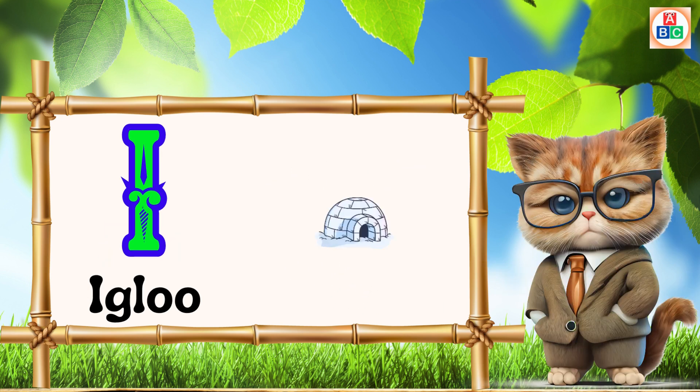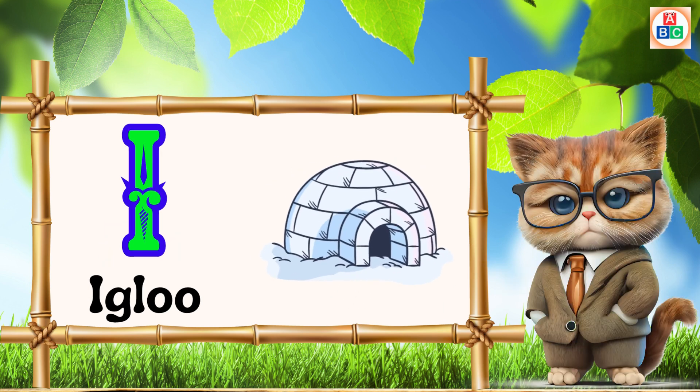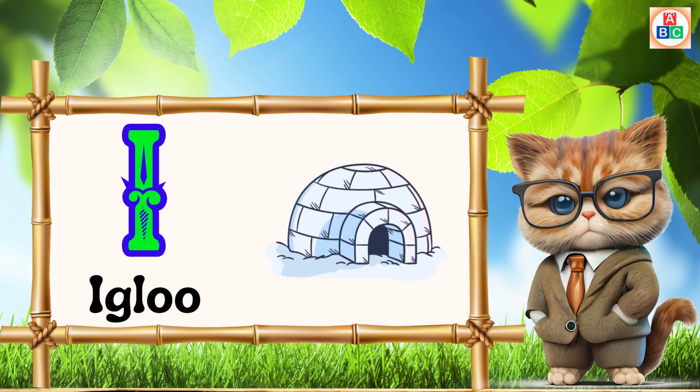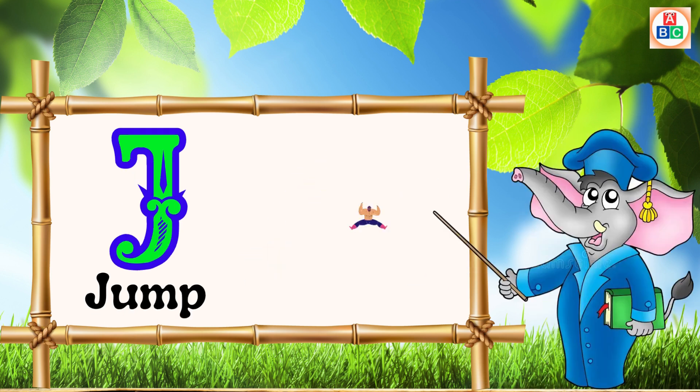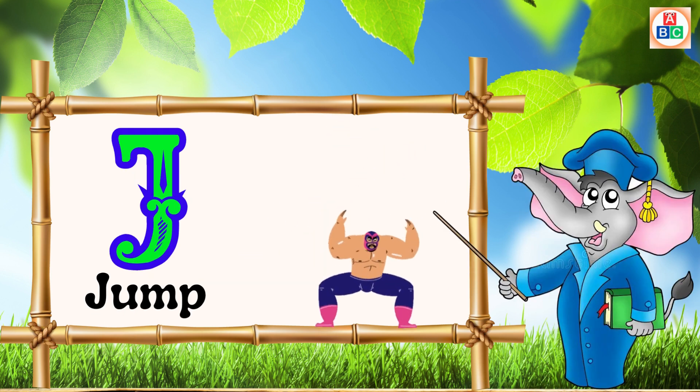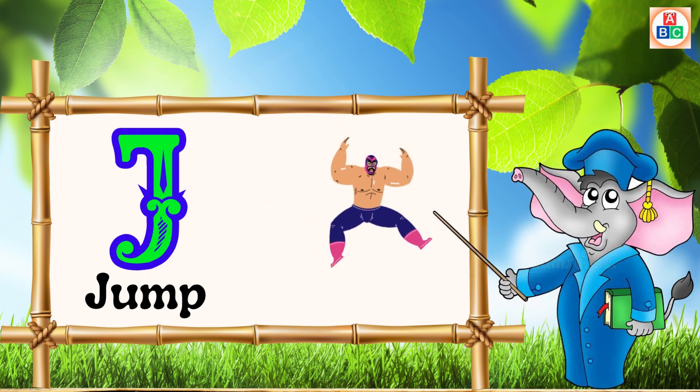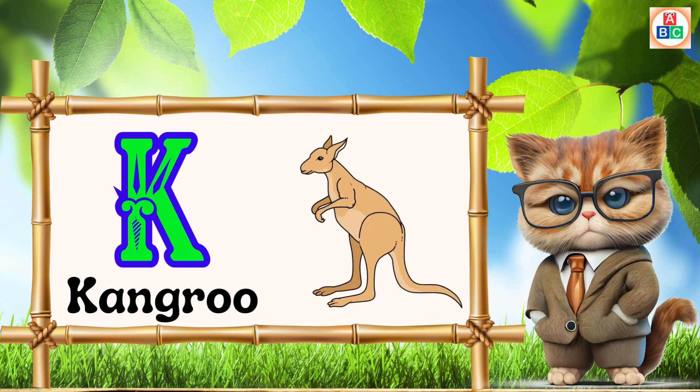I is for igloo, i-i-igloo. J is for jump, j-j-jump.